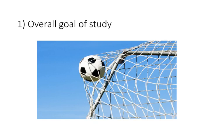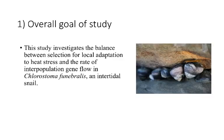In terms of what you should be including in this section, the first thing is the overall goal of your study. Here's an example from my poster. This might look something like: 'This study investigates the balance between selection for local adaptation to heat stress and the rate of interpopulation gene flow in Chlorostoma funebralis, an intertidal snail.' There are these competing factors — selection that causes local adaptation and gene flow that can make populations more similar and prevent local adaptation. So the goal is to gain a better understanding of the balance between those two opposing forces.